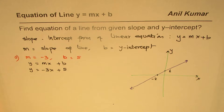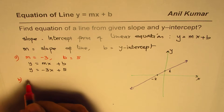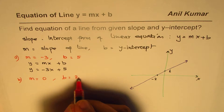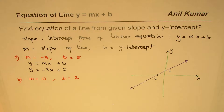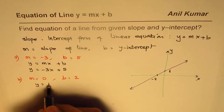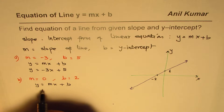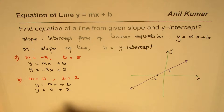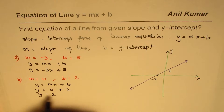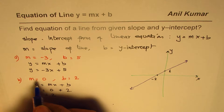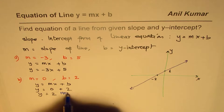Let's take another example with slope m = 0 and y-intercept b = 2. Starting with y = mx + b, substituting 0 for m gives y = 0x + 2, so the equation is y = 2. A slope of 0 means a horizontal line.